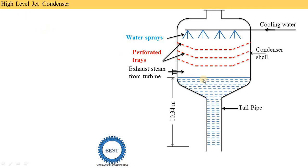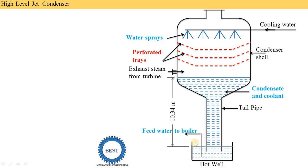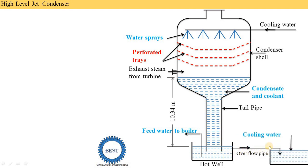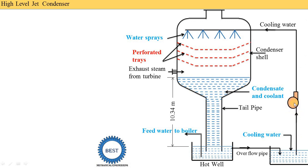Here, the condensate and cooling water are collected — this is the hot well. From the hot well, water is supplied to the boilers. When the hot well overflows, the water is supplied to the cooling water pond or cooling tank, and from there water is supplied to the condenser. But here the height is more, meaning the vacuum produced is not enough to suck the water up. So we need to install a cooling water pump, and at the top part of the condenser we need to install an air pump to remove air.